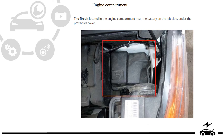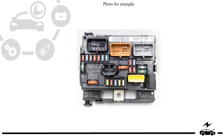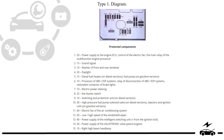Engine compartment fuse box. Location. Type 1. Diagram. Protected components. Type 2.